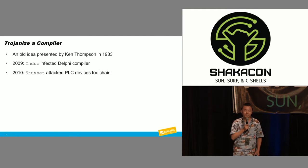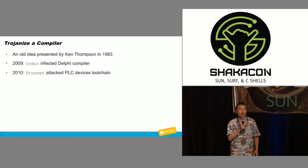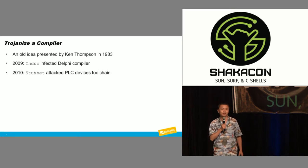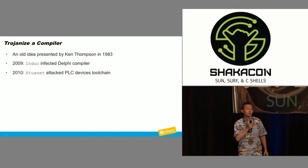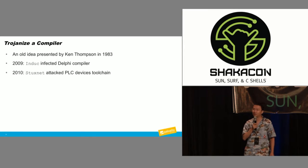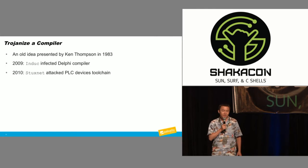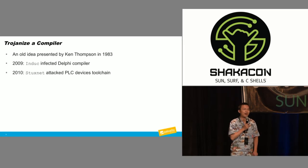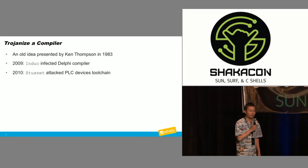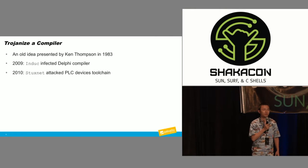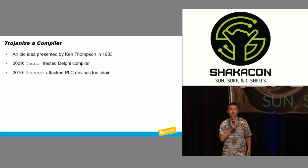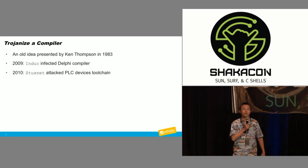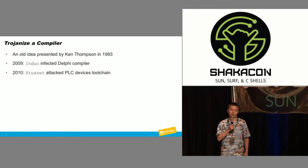Later, in about 2009, a malware family was discovered that infected the Delphi compiler, successfully attacking thousands of developers' computers. Then Stuxnet, although not directly targeting a compiler, learned from the same idea — it attacked PLC devices used in industrial control systems, and everyone knows how successful Stuxnet was in delivering its goal.